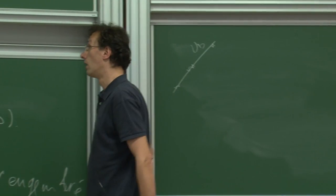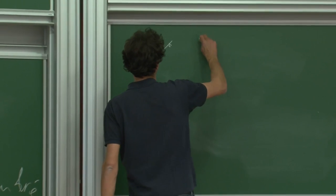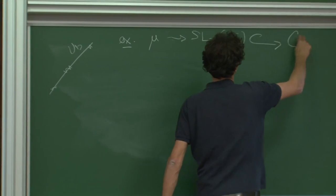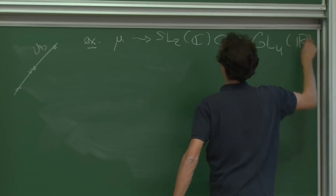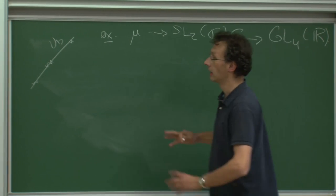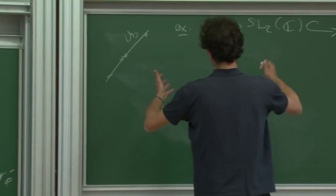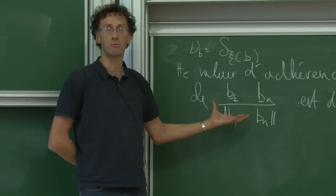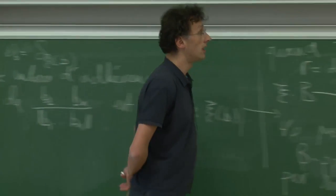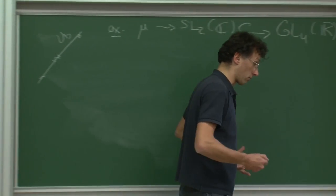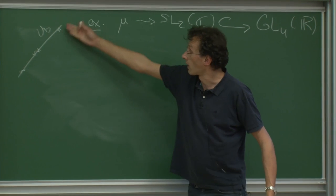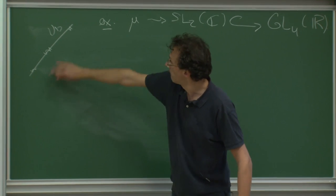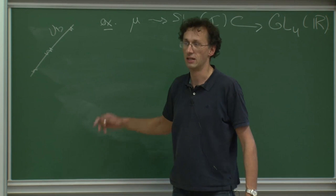Voilà le dessin. Ce que je viens de décrire est une propriété de direction : je sais où la grande matrice aléatoire va envoyer l'espace. Maintenant je vais étudier sa norme précisément — c'est-à-dire la quantité par laquelle j'ai divisé. Je vais essayer de montrer une loi des grands nombres pour la norme de la matrice.